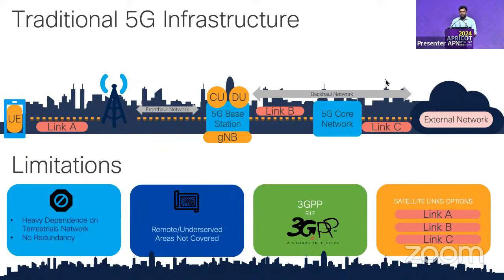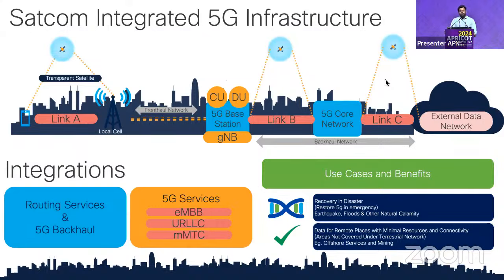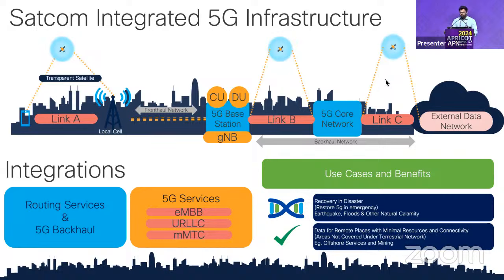3GPP Release 17 discusses the split of the gNB. In a satellite-integrated 5G architecture, user equipment can connect directly to the satellite which then connects to the local cell — known as transparent satellite technology. Satellite links can also be used between the gNB and the 5G core as redundant or backup links to terrestrial infrastructure.